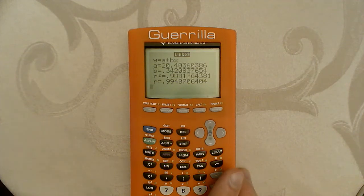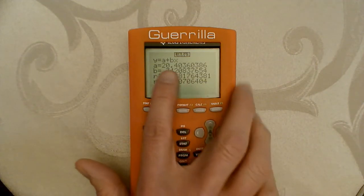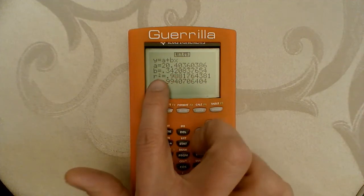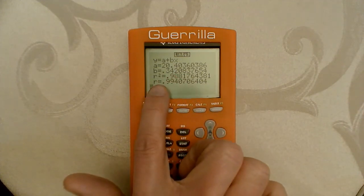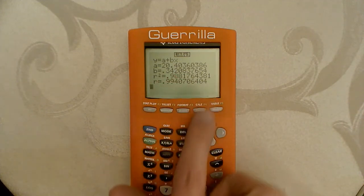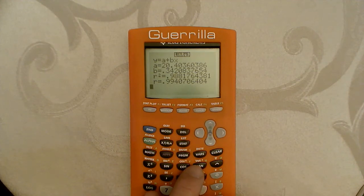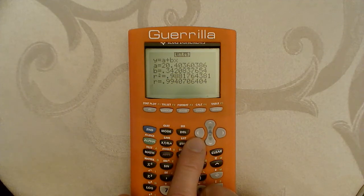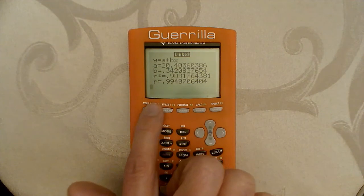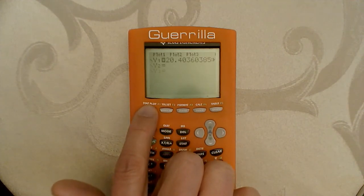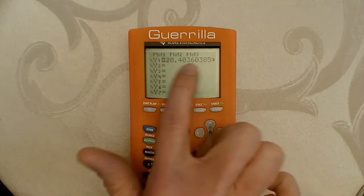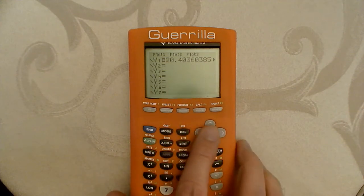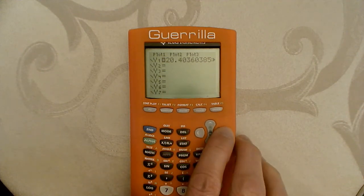Okay, so we just ran our least squares regression. We have the equation here, we have the coefficient of determination and the correlation coefficient listed. Let's now look at how we create a scatter plot from this. I asked it to store this equation in my y1, so if I hit my y equals, I see the equation stored here out to, you know, the values have a lot of decimal places. If I scroll over I could see the whole thing.